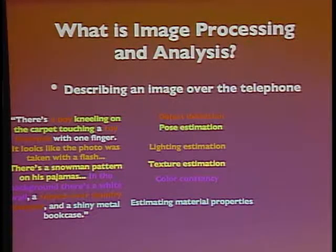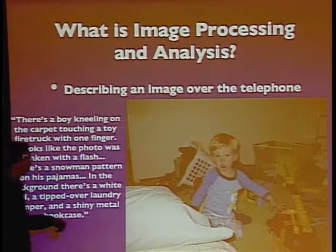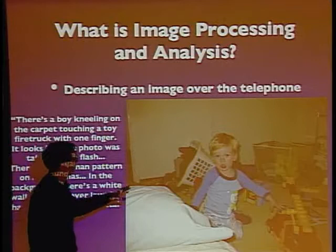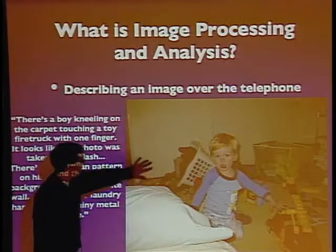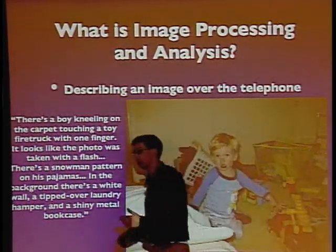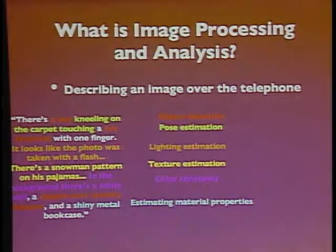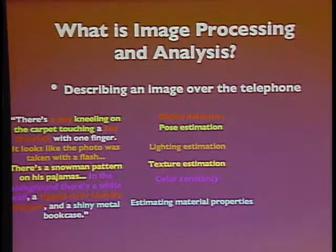Even though this wall goes from relatively bright here to relatively dark in the background, you can probably guess it's all the same color — a light color like white or off-white. That's called color constancy: being able to tell the intrinsic color of things independent of how they're lit up. And the thing about the shiny metal bookcase is estimating material properties.